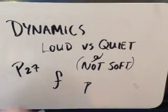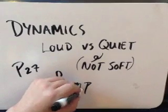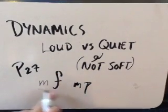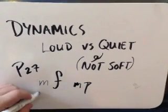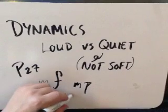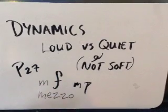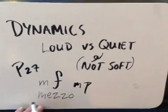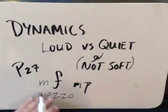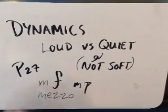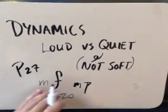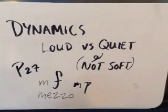You can temper this by putting an M in front of either of these. The term is mezzo, spelled M-E-Z-Z-O — it's not 'mezzo,' it's 'mezzo.' So mezzo forte means medium loud, and mezzo piano means quiet but not as quiet as really quiet.